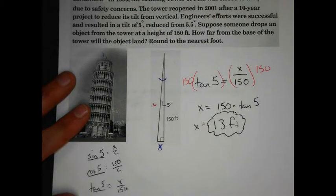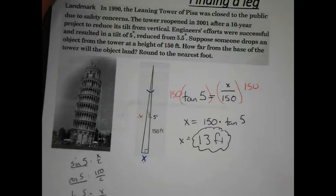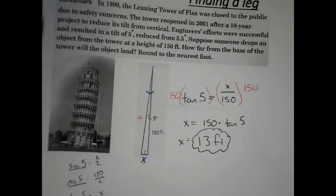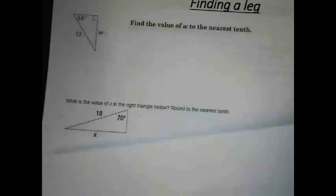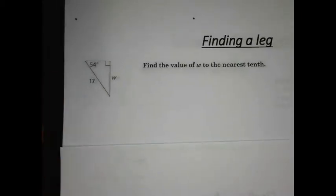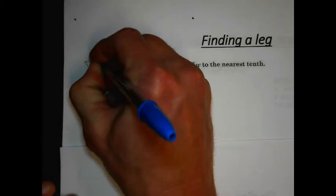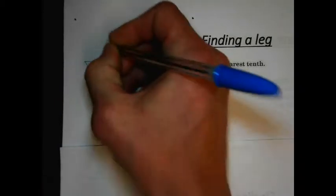The key takeaway is to remember that the trig ratio is not only a ratio — it's an operation. So that's how that works. Now we're going to find a leg in another example. Here's a basic right triangle. We're going to find the value of W. The angle in question is 54 degrees.